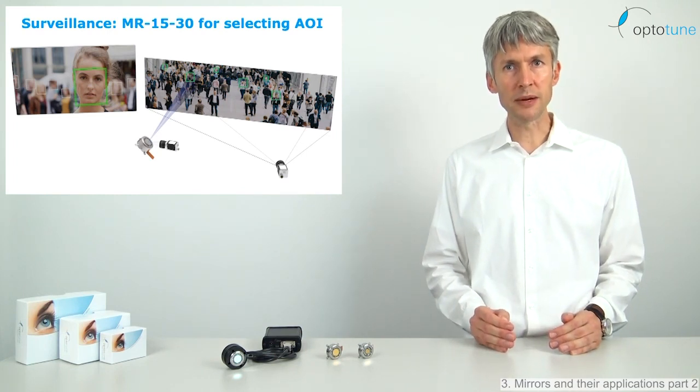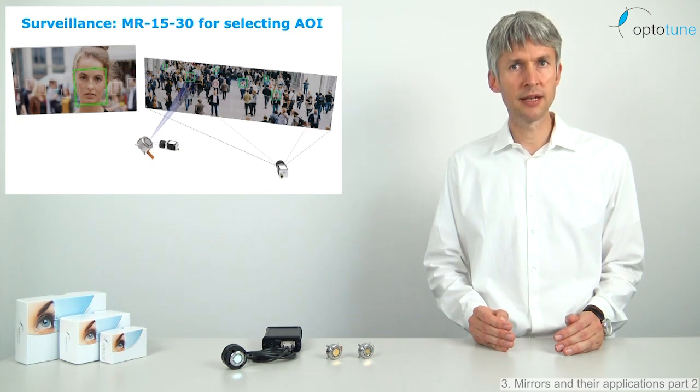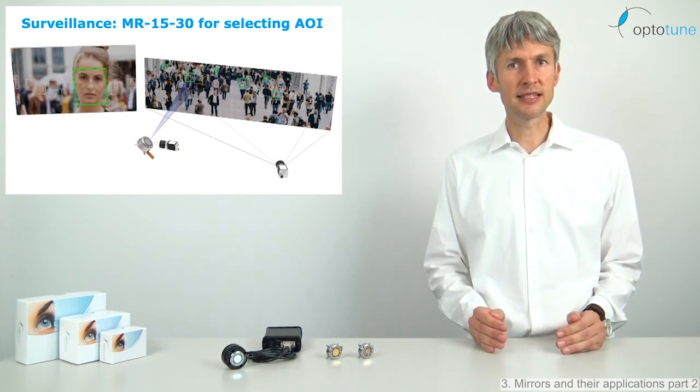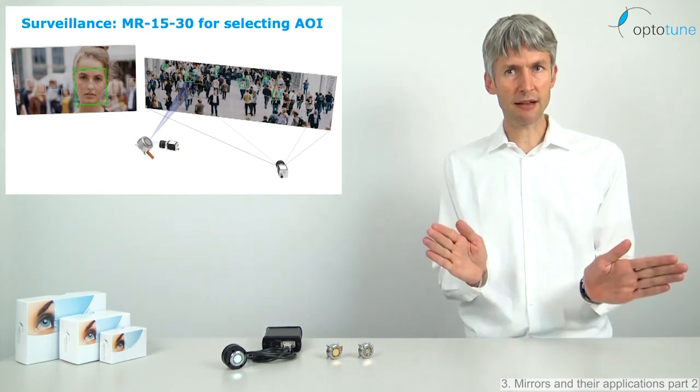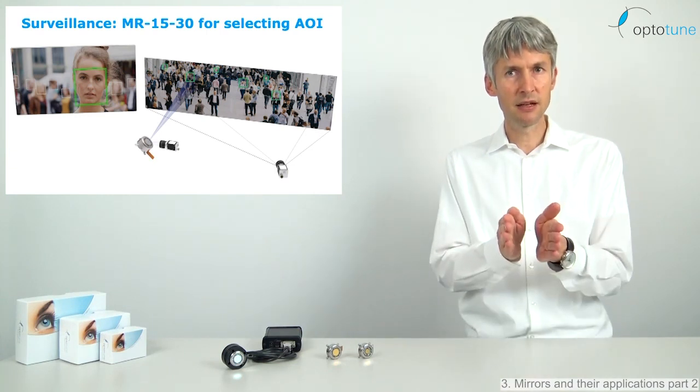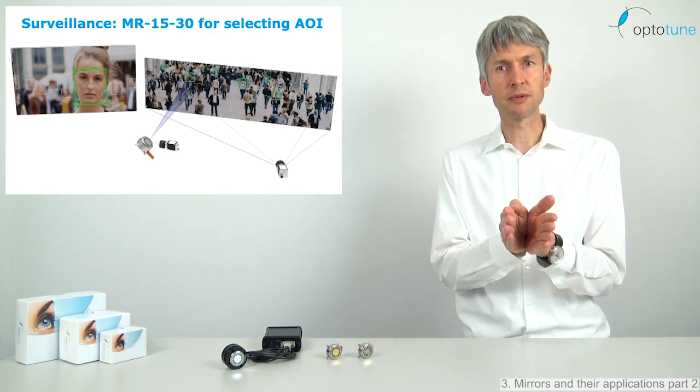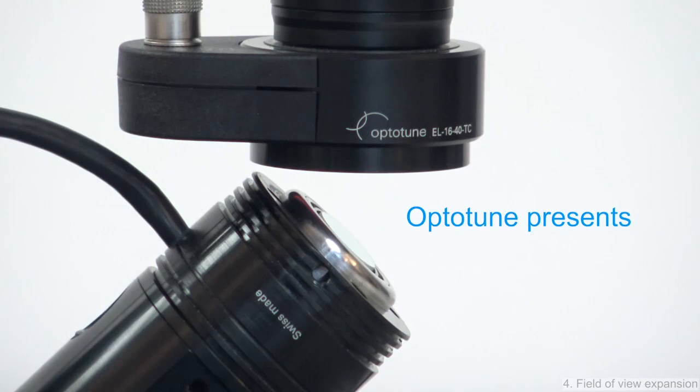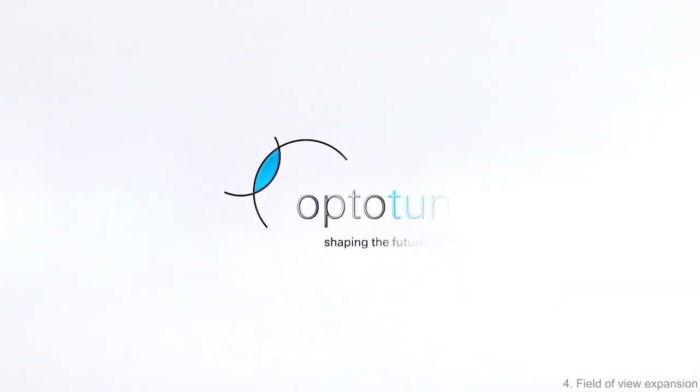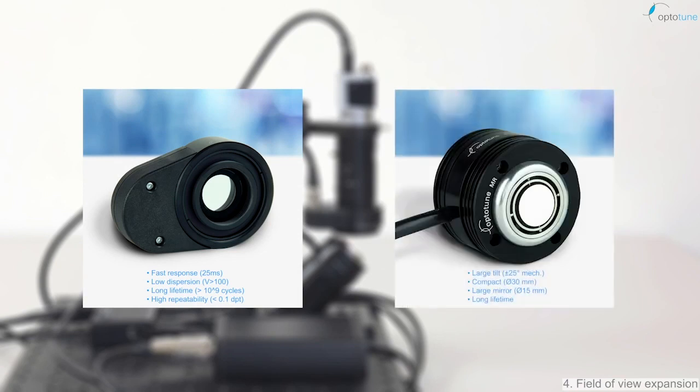Surveillance applications, for example homeland security in airports and other busy public spaces, have in common that the camera is typically far away from the object. A possible configuration is depicted here. The stand-alone camera on the right is equipped with a wide-angle objective to capture the overall scene. The camera on the left is equipped with a narrow-angle tele-lens and looks on the mirror and allows to zoom in and select a smaller area of interest of about 5 degrees out of a 100 degree optical field of view.